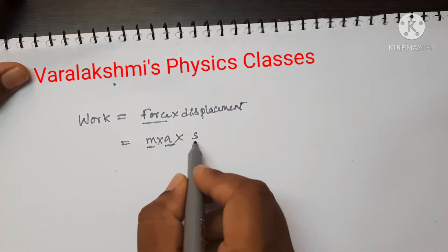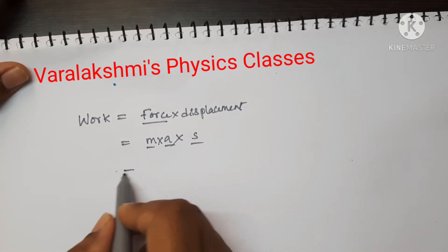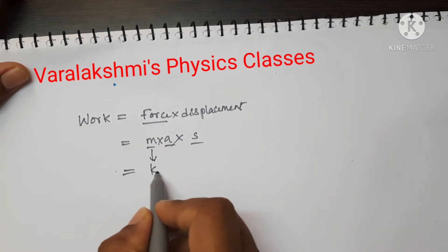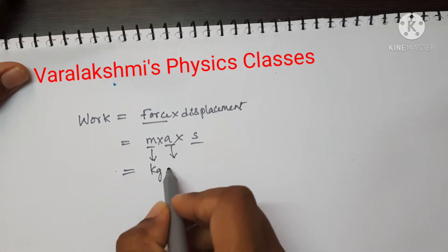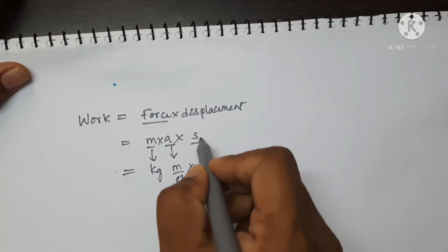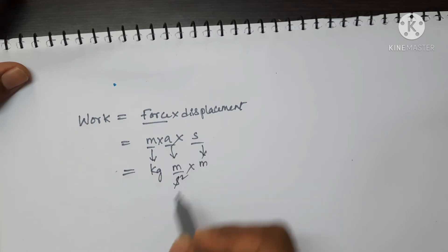Now write the SI unit for each of the terms. For mass, kilogram. For acceleration, meter per second square. And for displacement, meter.